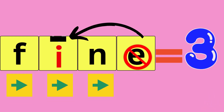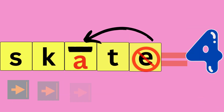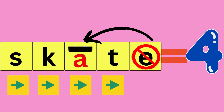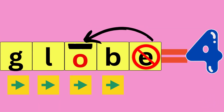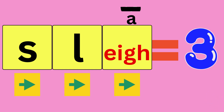Fine: F-I-N, fine. How many sounds did you hear? Three. Skate: S-C-A-T, skate. How many sounds did you hear? Four. Globe: G-L-O-B, globe. How many sounds did you hear? Four. Slay: S-L-A, slay. How many sounds did you hear? Three.